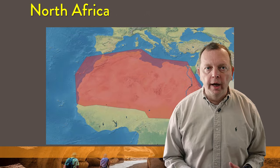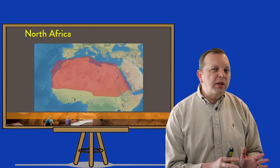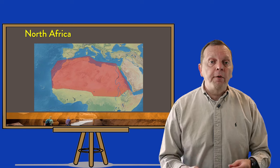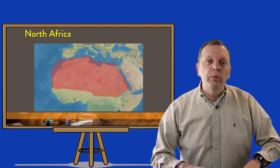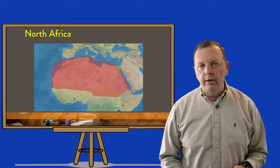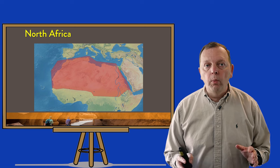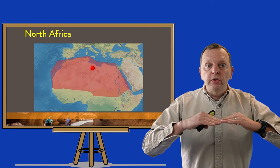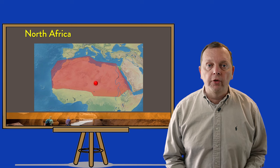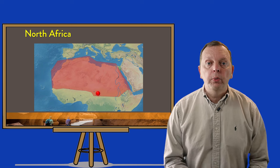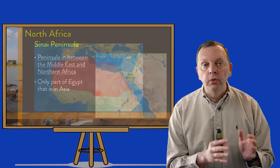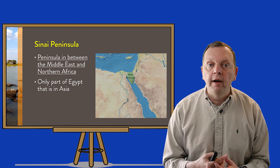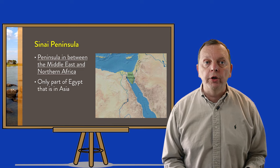Then there is North Africa, which stretches across the northern portion of Africa. How far North Africa extends southward really depends upon who's defining the region. For this lesson, we're going to define North Africa stretching from the Mediterranean Sea down to just south of the Saharan Desert. In between the Middle East and North Africa is the Sinai Peninsula, which is actually the only portion of Egypt that is part of Asia.